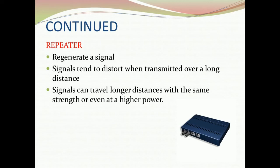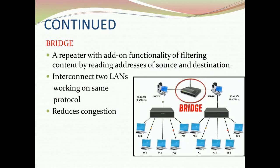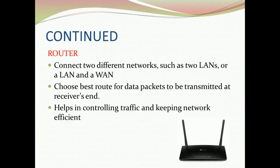The repeater regenerates the signal and produces the same strength again. Next is router. A router is a device like a switch that routes data packets based on their IP addresses. Router normally connects LANs and WANs together. It controls network traffic by choosing the best route for data packets to be transmitted at the receiver's end, so a router works like a traffic police.